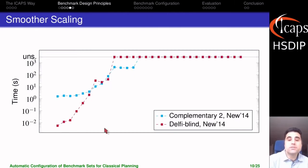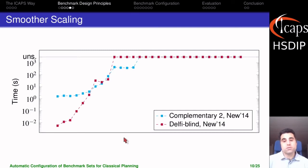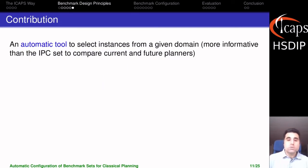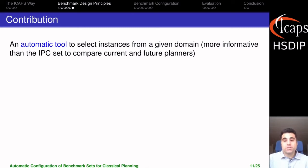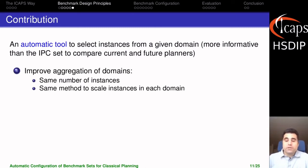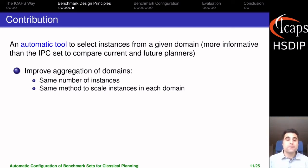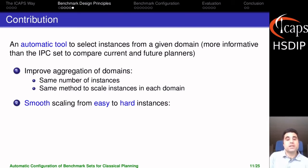In contrast, if we generate a new scaling for the same domain, we see that difficulty increases at a more constant ratio, and now we can actually see some differences in coverage. So our contribution is going to be an automatic tool to select instances from a given domain, and hopefully this will provide a more informative benchmark set than the IPC set when we use it to evaluate planners in future papers. This is more informative for two reasons: by always using the same number of instances and the same method to scale instances in each domain, aggregation statistics like total coverage will be slightly more significant. More importantly, we will achieve a smooth scaling from easy to hard instances, highlighting differences not observable with the current IPC set.